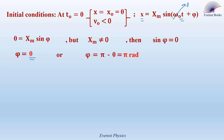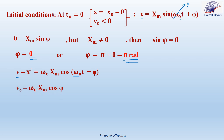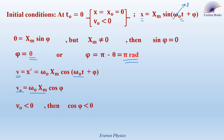We have two possible values of phi: 0 and π radians. To find the correct one, we use the expression for v: v equals omega_0·xm·cos(omega_0·t + phi). Substituting v0 at t equals 0: v0 equals omega_0·xm·cos(phi). Since omega_0·xm is positive and v0 is negative, cos(phi) must be negative. cos(0) equals +1 (positive), but cos(π) equals −1 (negative). Therefore, phi equals π radians.